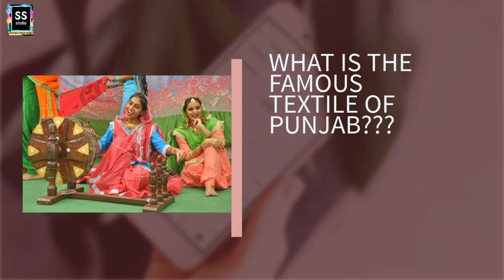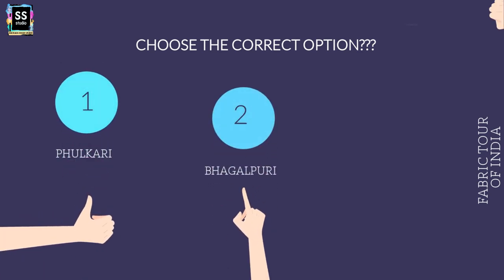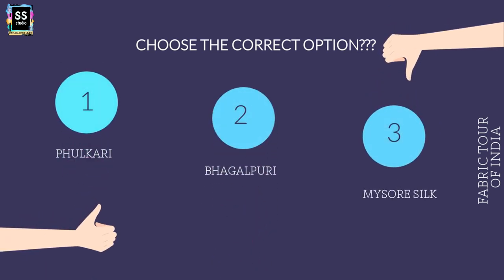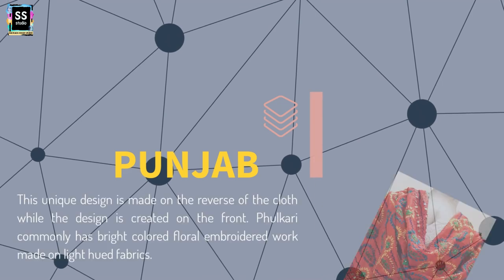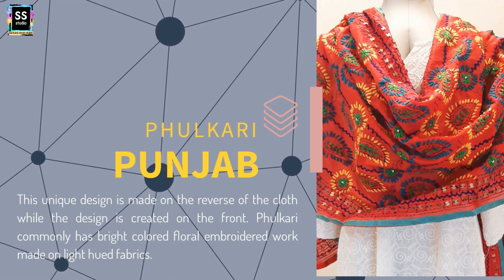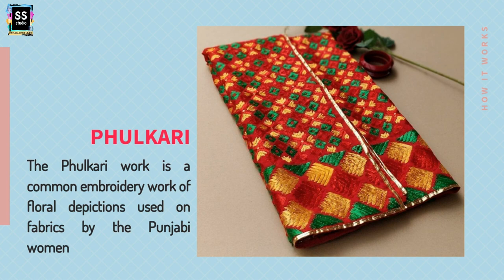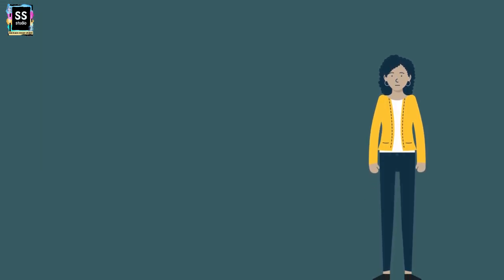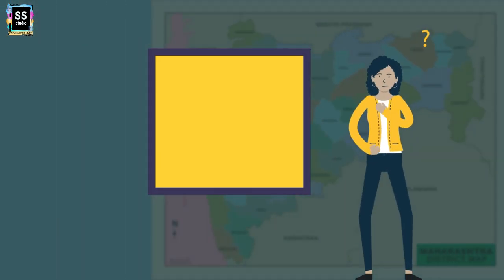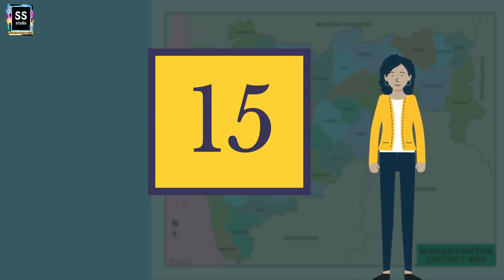State 14: Which is the famous textile of Punjab? As the picture and culture suggest, the options are Phulkari, Bhagalpuri Silk, or Mysore Silk. It is Phulkari. This is a unique design made on the reverse of the clothes while the design appears on the front. Phulkari features bright colours and floral motifs depicted on the fabric, and is worn by both Punjabi women and men in their kurtas.